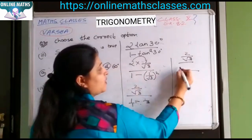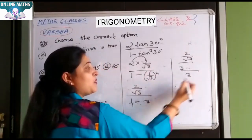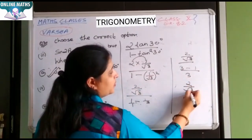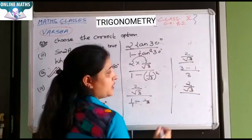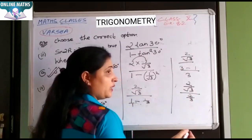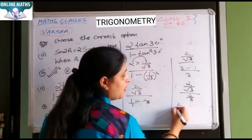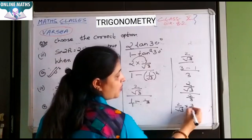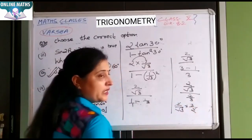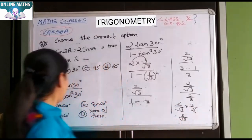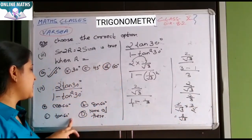2 upon under root 3. LHS hai 3. 3 ko 1 se multiply karo ge 3. 2 upon under root 3. 3 minus 1 is 2. 2 upon 3. Now reciprocal. Reciprocal karo ge to denominator ulta. 2 upon under root 3, 3 upon 2. 2 se 2 cut gaya. Aapka answer is 3 upon under root 3. 3 upon under root 3 kisi ki value hai?